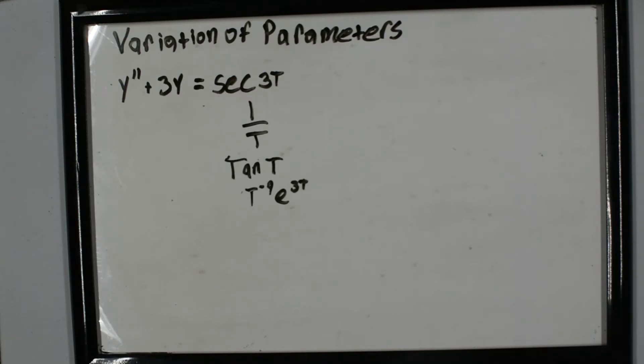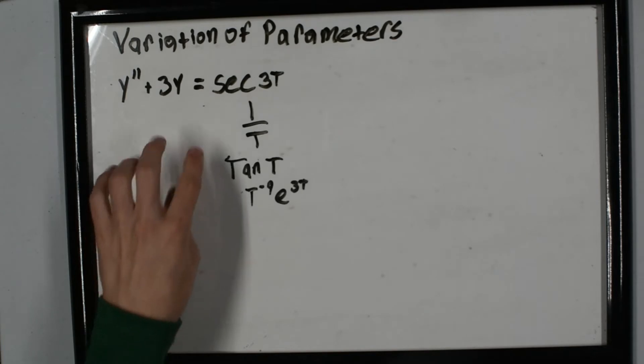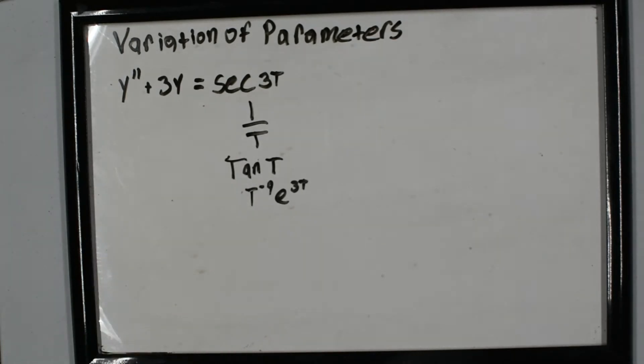If you're not really sure what to use—if it's a weird function—typically it will be variation of parameters. Variation of parameters will always work. Not always, but it's the catch-all. It'll work most of the time.